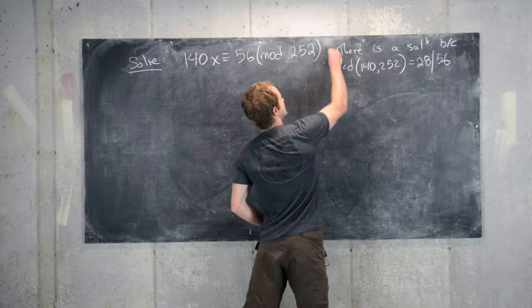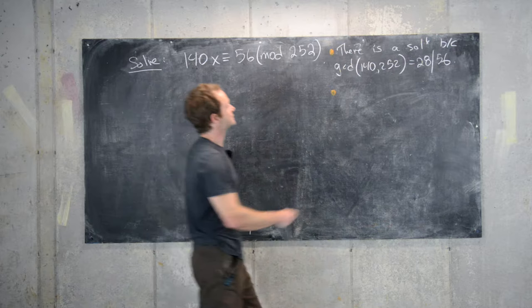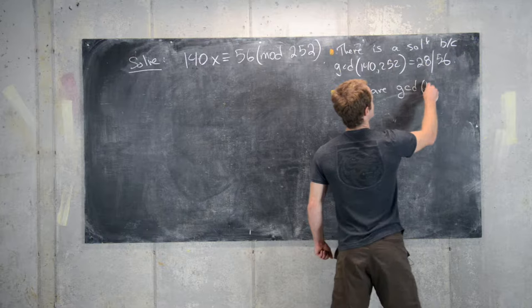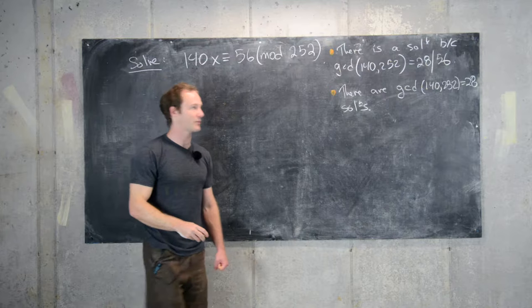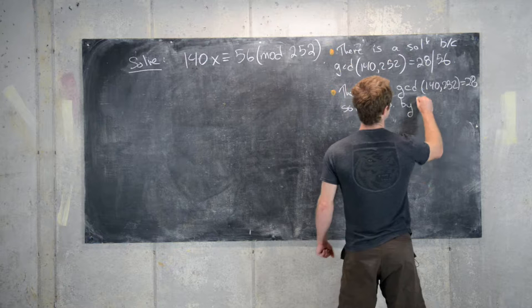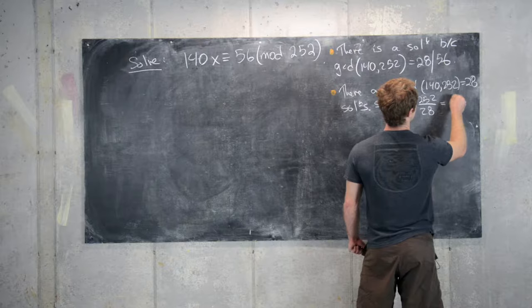So the second fact is how many solutions there are. So there are, again, GCD of 140 and 252, which is equal to 28 solutions. And these are separated by, so separated by 252 divided by 28, which is 9.